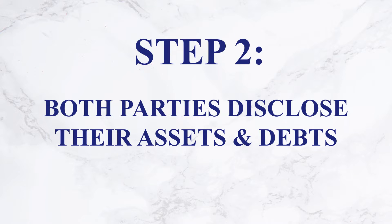Step two: both parties disclose their finances, including all assets and debts. Both parties will need to list all of the assets and debts they are bringing to the marriage. Be sure to be honest and thorough in making this list, as failure to disclose information could leave the prenup vulnerable to being overturned in court later on. Many prenuptial agreement attorneys will ask you to fill out an intake form prior to your initial consultation, which can serve as a helpful tool prompting you to list your assets one category at a time.